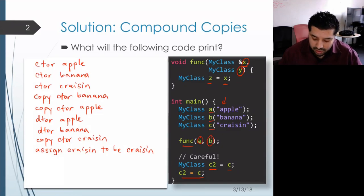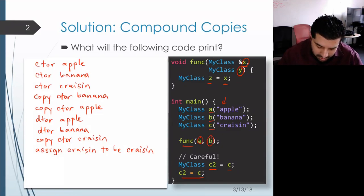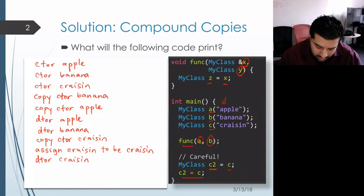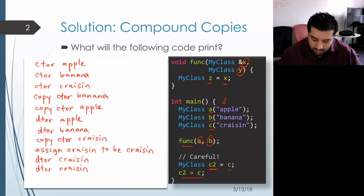Now we reach the end of main, which means all of the local objects get destroyed in the reverse order in which they were created. c2 was the last one created, so it's the first to be destroyed and it has the string 'crazen'. The next to last one created was c, which also has the string 'crazen', so we get another 'dtor crazen'.